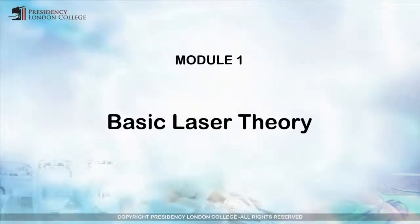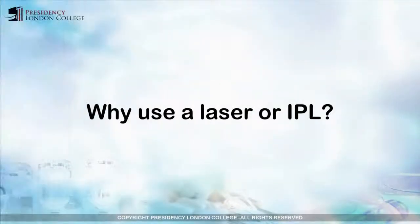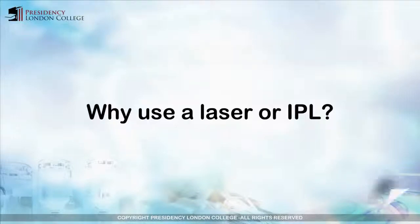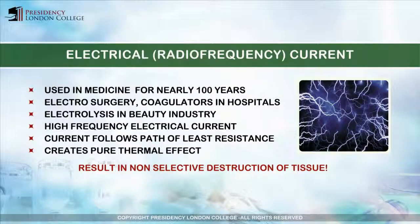Module 1: Basic Laser Theory. You may be wondering why use a laser or intense pulse light to treat aesthetic skin conditions when there are alternatives, for example electrosurgery or radiofrequency. Electrical and radiofrequency current has been used in medicine for nearly a hundred years. Electrosurgery and coagulators are examples used in hospital operating theatres. Electrolysis for epilation is another example used in the beauty industry.